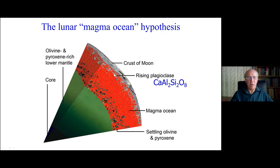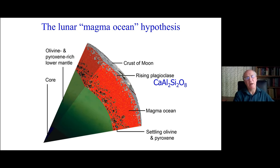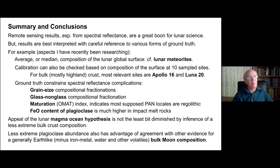Let me conclude. While all the remote sensing results are tremendous — and spectral reflectance is especially great for its unequaled spatial resolution — we have to be careful. The ground truth from meteorites and Apollo and other acquired samples have important lessons. For bulk composition, lunar meteorites are telling us that story better than any of the remote sensing, frankly, and especially better than some forms of the reflectance spectrum. Ground truth constraints show that grain size fractionations are very important, as is glass versus non-glass compositional fractionation. The magma ocean hypothesis is in fine shape from this standpoint.